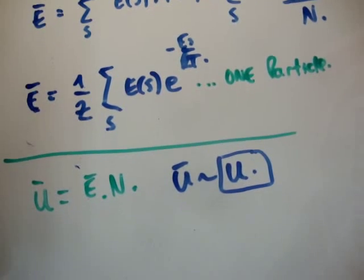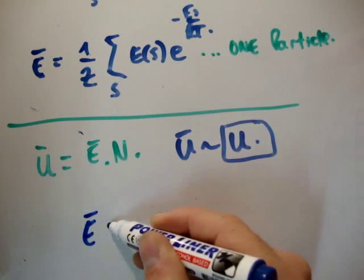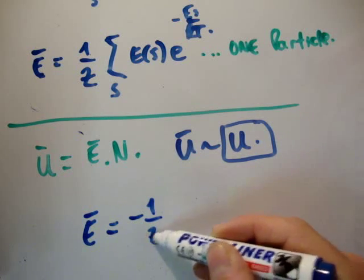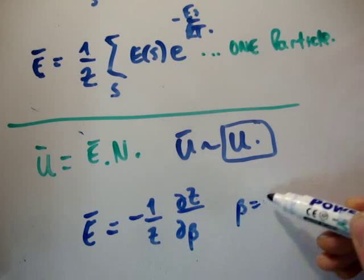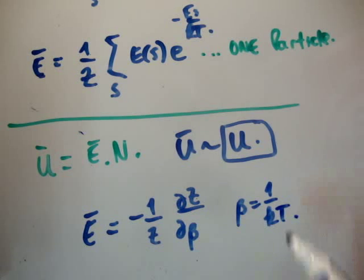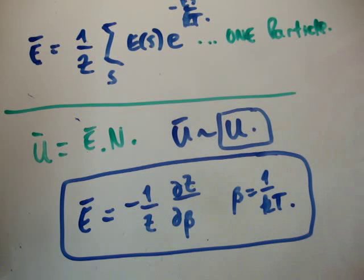Now, I'm not going to prove the following relation. But this is a very, very important and useful relation. That e bar is equal to minus 1 over z del z del beta, where beta is equal to 1 over kt. The point I'm trying to make here is this. If you somehow know the partition function of your system, if you differentiate your partition function with respect to beta and multiply it by 1 over z, then you have the average energy of your system, or the average energy of a single particle. If you then multiply that by the total number of particles, you have the total energy of your system, give or take.